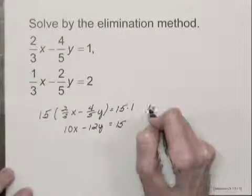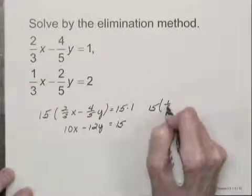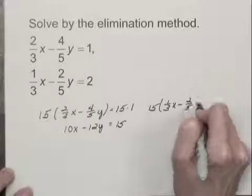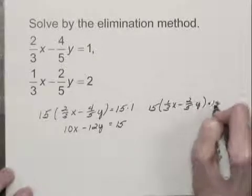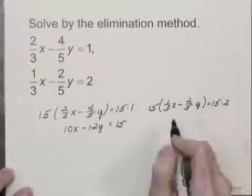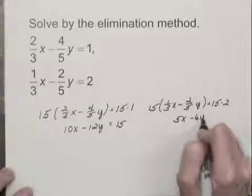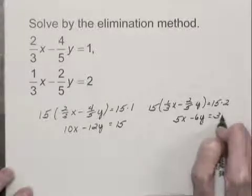Now let's do the same kind of thing with the second equation. I have fifteen times one-third x minus two-fifths y equals fifteen times two. And when I do these multiplications, I have five x minus six y is equal to thirty.